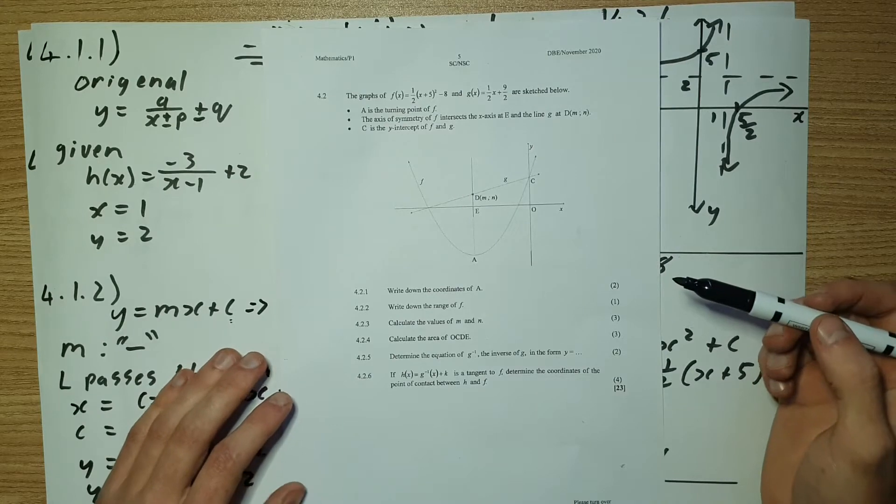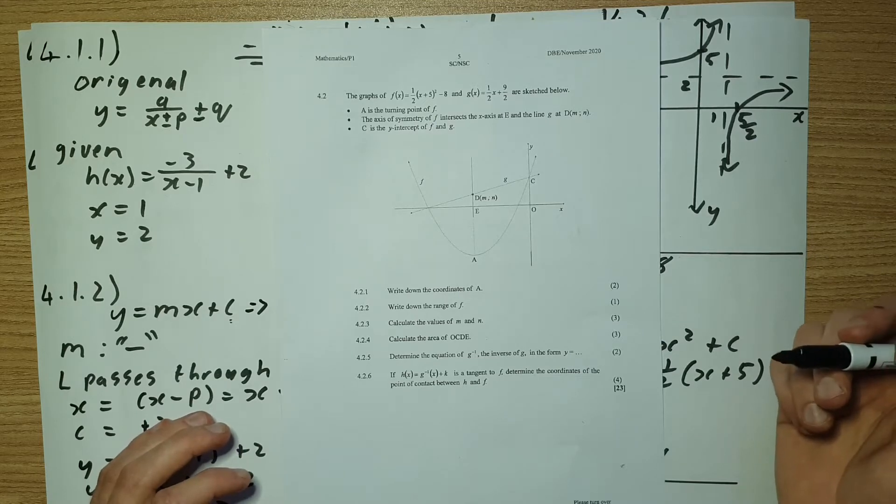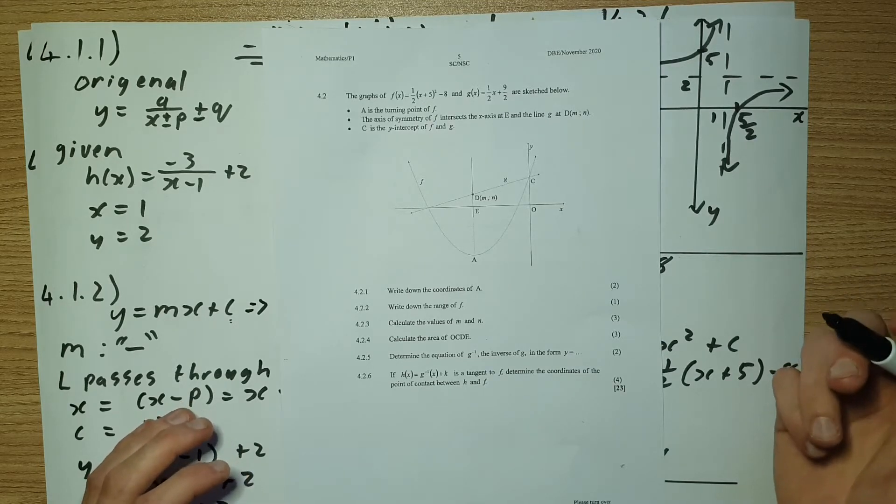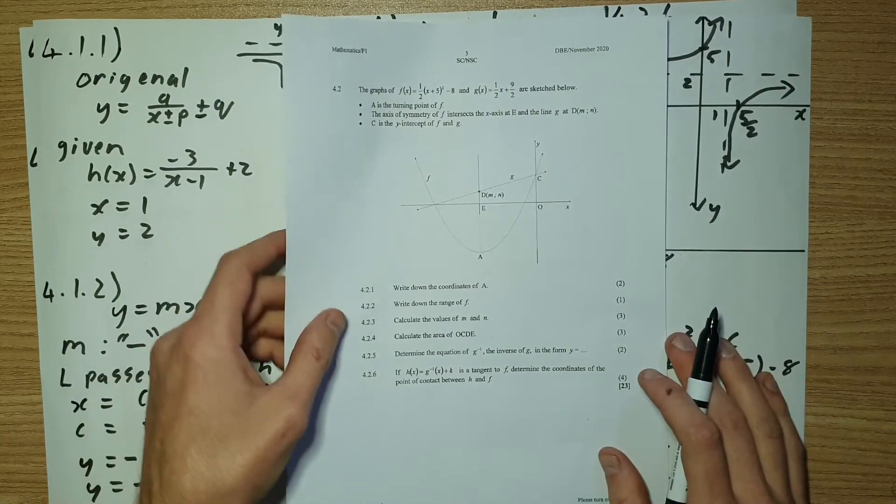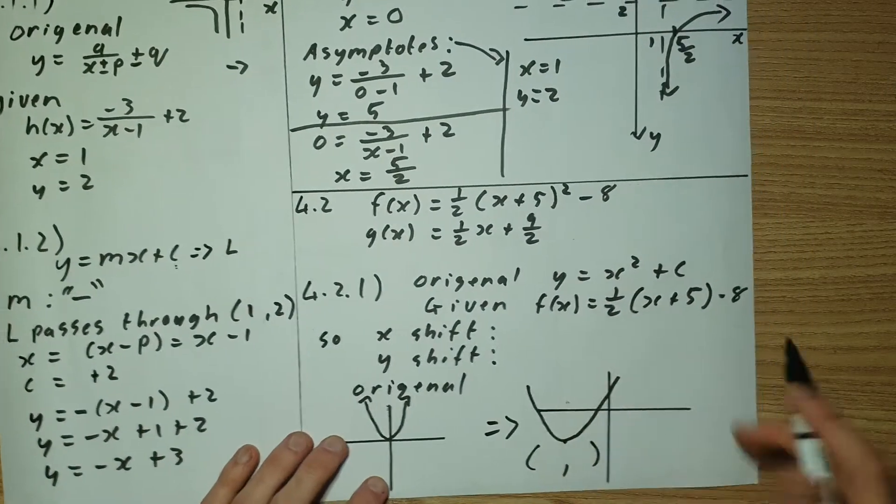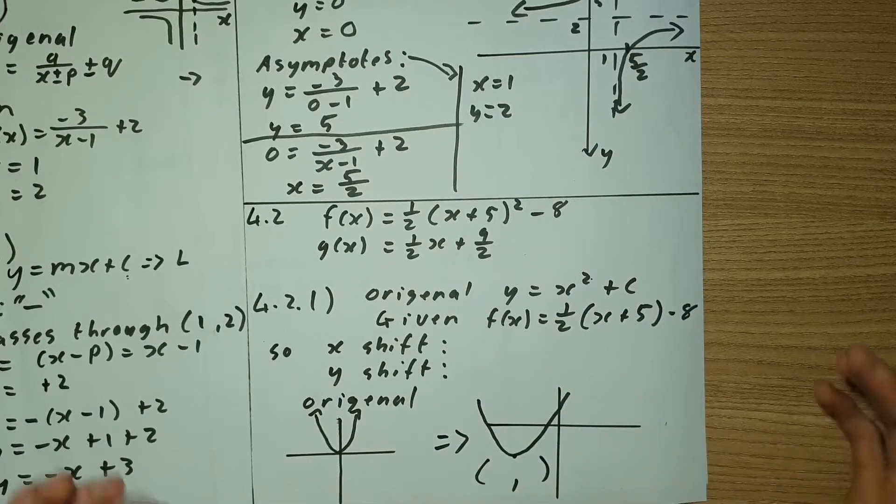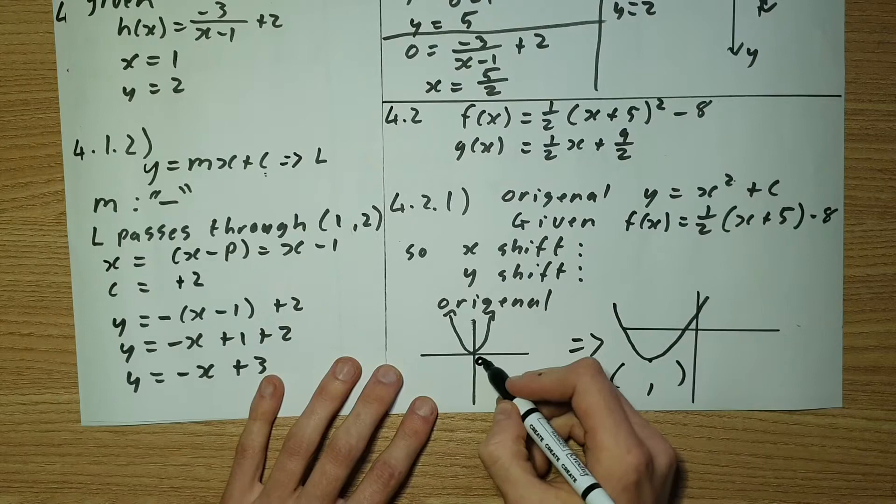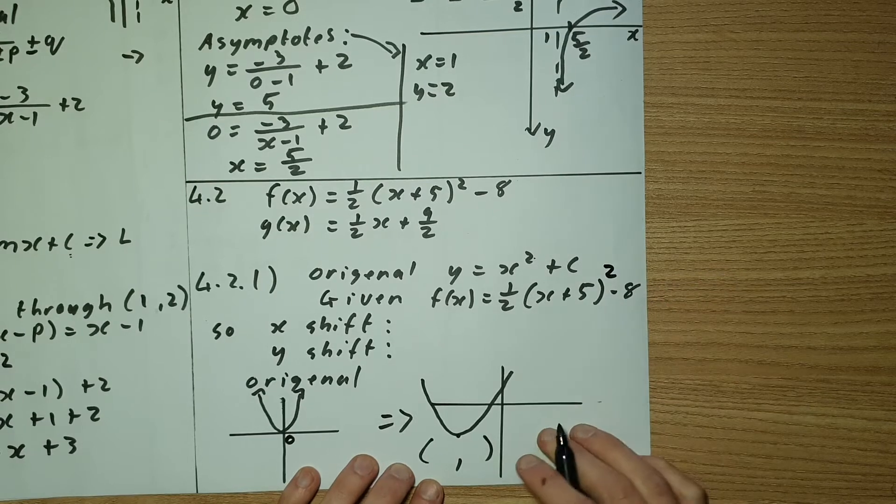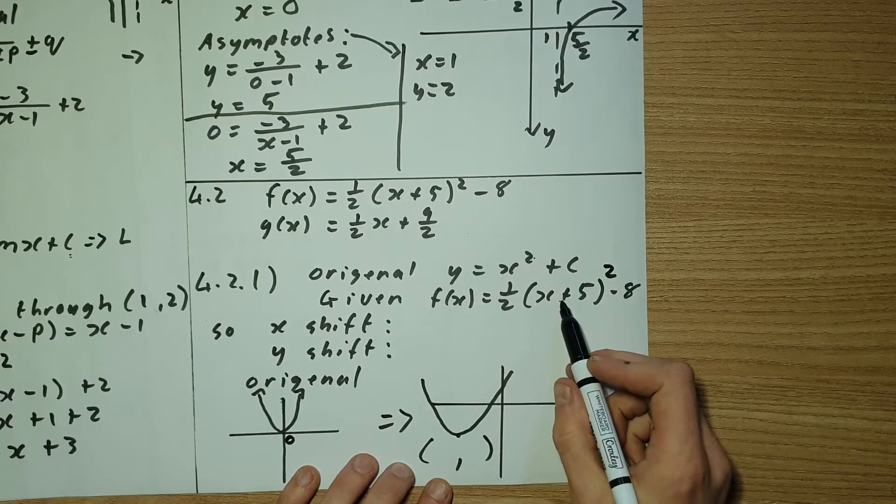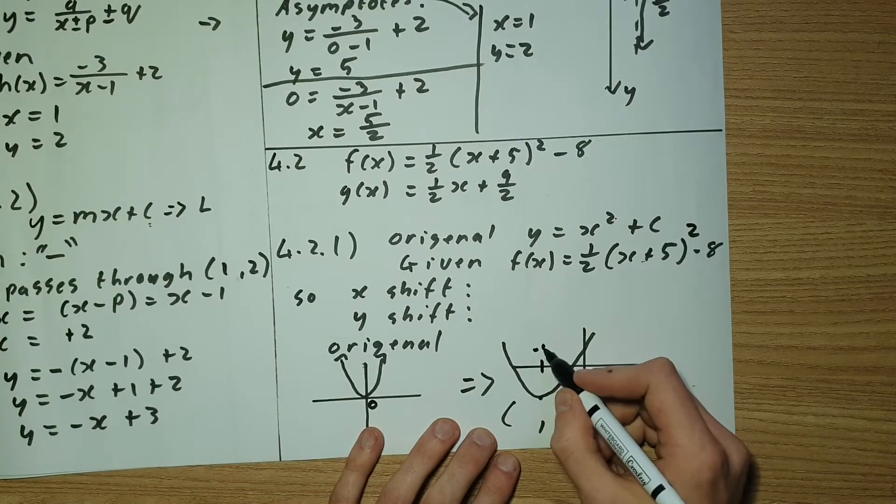Now, there are three ways of finding turning point. You can use the formula negative b over 2a. You can use the axis of symmetry, or you can use your calculus, where we have the gradient equal to zero. But there's an easier way of doing this one. If we look at f of x, which was given to us, the original form of my parabola is x squared plus c. That's a basic parabola where we're sitting at zero. But now if we look, we've substituted x plus 5 into x's place. So we've shifted my graph to the left by 5 units. Now I'm sitting over here at negative 5.